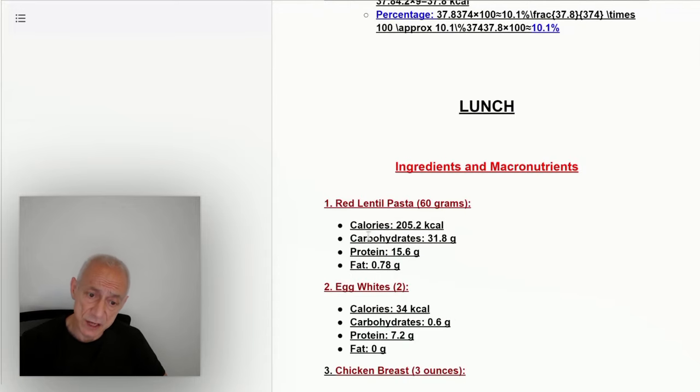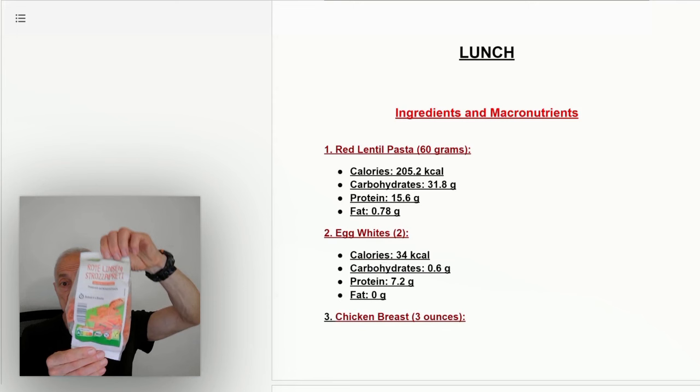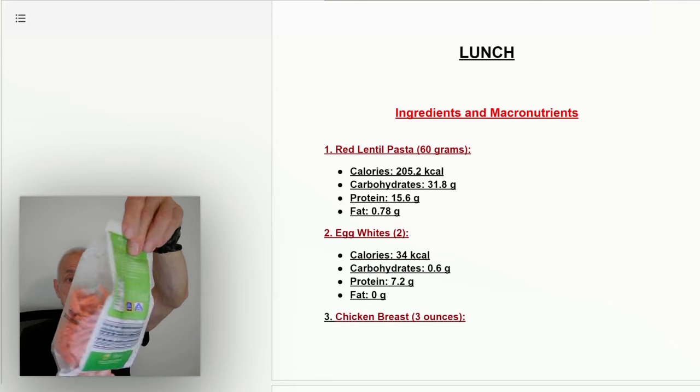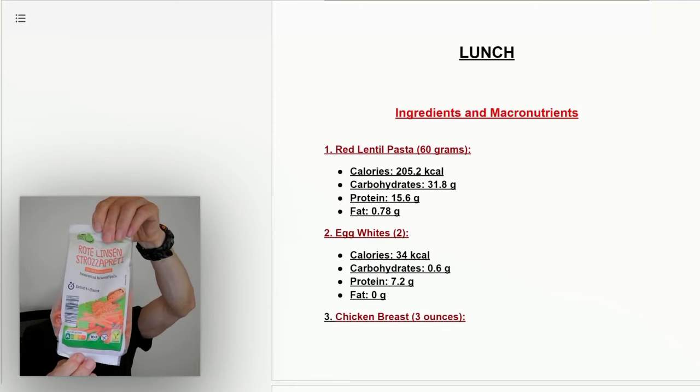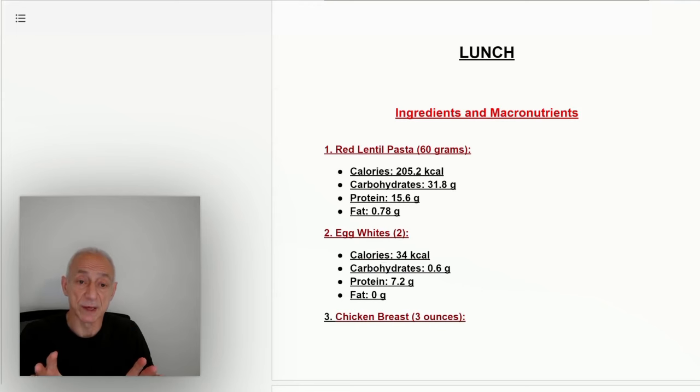Okay, my lunch. Here's the ingredients for my lunch: red lentil pasta. Let me show you what the red lentil pasta is. You can see it right there. It's organic, made from lentil, and it's high in protein and low glycemic. This is why I eat it. It's not like regular pasta. This is low glycemic, which means it takes longer to burn the carbohydrates.